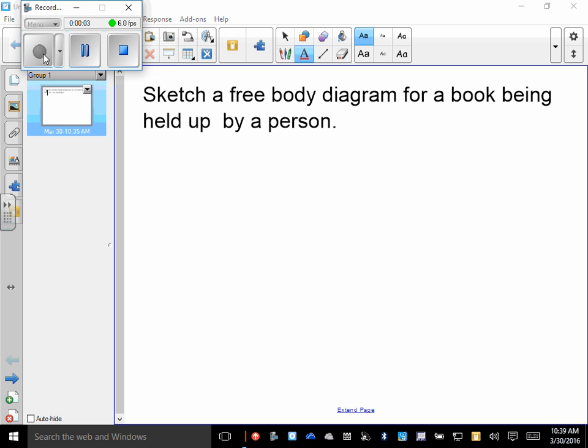Sketch a free body diagram for a book being held up by a person. So first of all, we do a quick sketch of the book. That's what a book looks like from the side. It's being held up by a person. We put a dot in the middle.